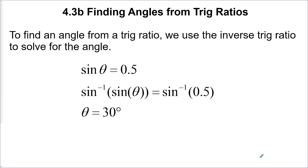Section 4.3b: finding angles from trig ratios. Last time we found trig ratios when we were given the angle; this time we want to find the angles once we're given the trig ratios. We've actually done this before — given the trig ratio, you can use the inverse trig function to cancel out the trig function and solve for the angle. We could also, now that we know these special angles, recognize a special ratio and find the angle from memory.